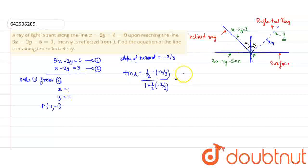So, that will be minus 2/3 minus m. This is our equation, and 1 plus minus 2/3 upon m.